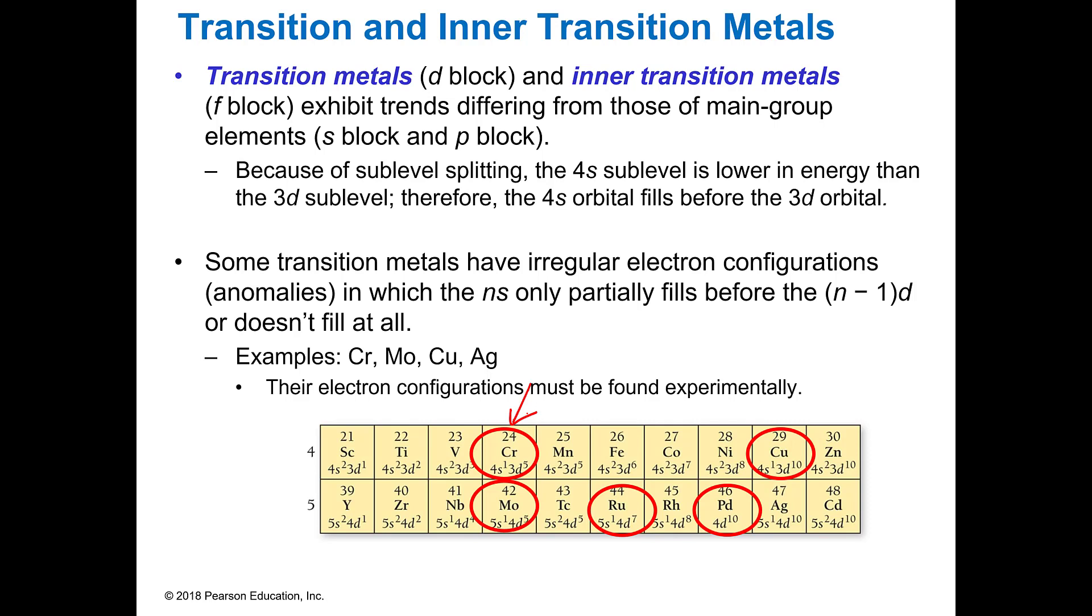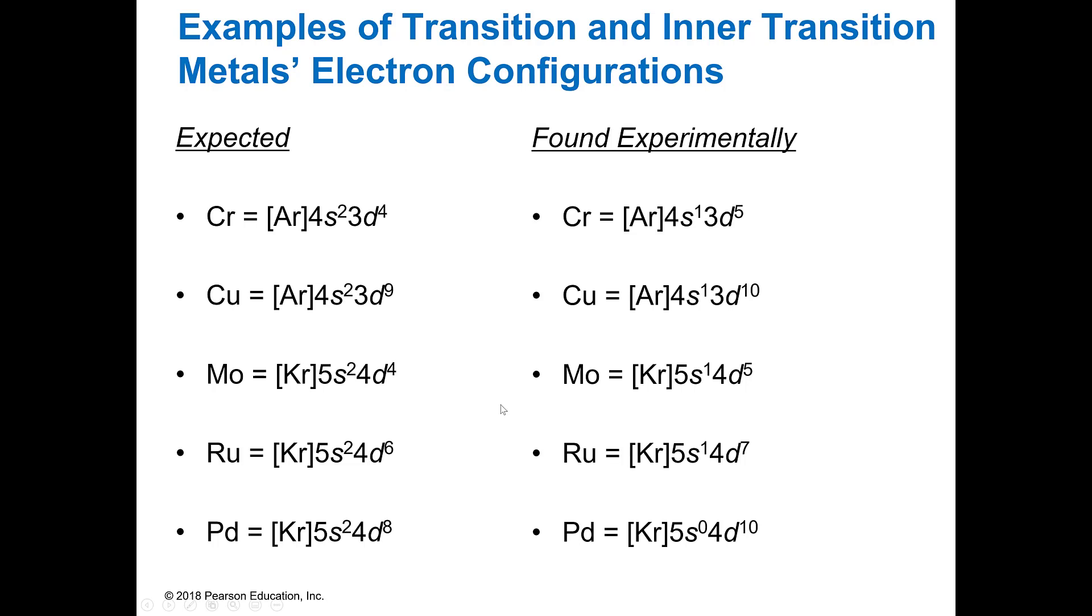So typically if you're doing homework or something and you put it in like it should be and it tells you it's wrong, then it's probably one of these anomalies. I just gave you a few examples of this like chromium. Chromium is one we see a lot. Copper. And notice both of those are instead of 4s2, 3d9, it's 4s1, 3d10. Same thing with rubidium. Rubidium can do it multiple ways as well. So it just depends on the metal.